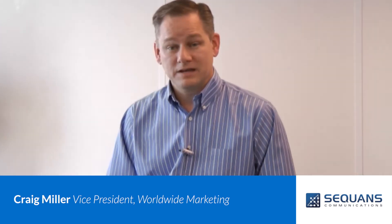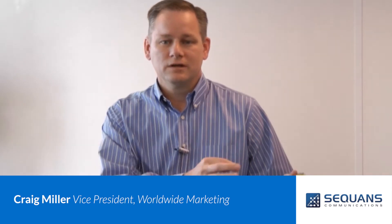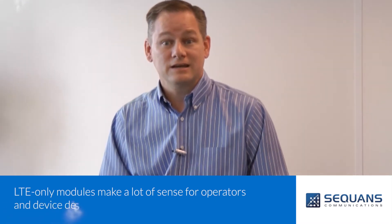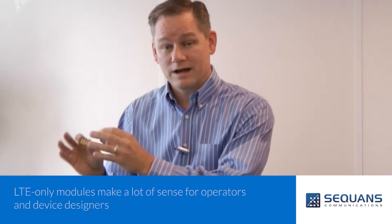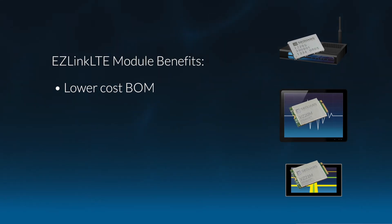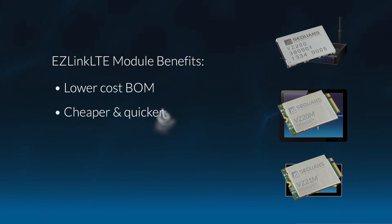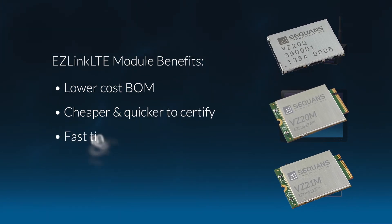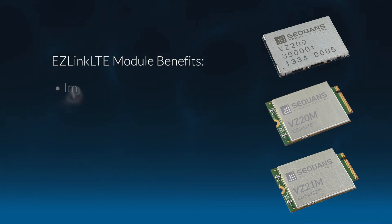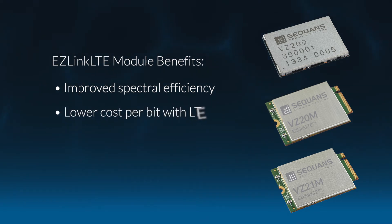Now that you've decided that connectivity makes sense in your device, the choice is between a multi-mode connectivity option and a single-mode LTE-only option. There are a lot of reasons why LTE-only makes a ton of sense, and the major benefit is economics — both for the device and for the operator. On the device side, you have lower cost of the bill of materials. LTE-only is lower cost than multi-mode counterparts, cheaper and faster to certify, smaller, and consumes less power. In addition, it's more economical for an operator to deliver broadband connectivity over an LTE network versus over a 2G or 3G network.